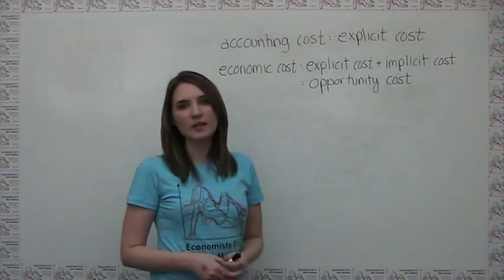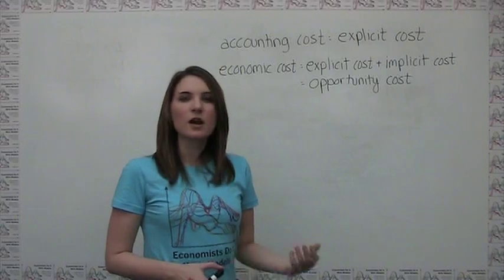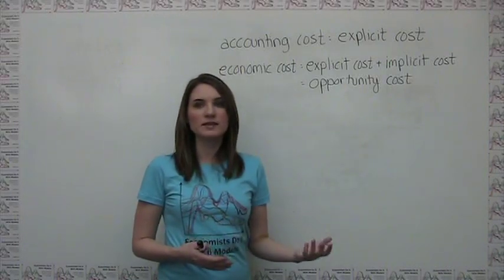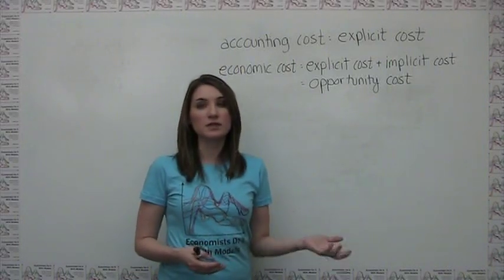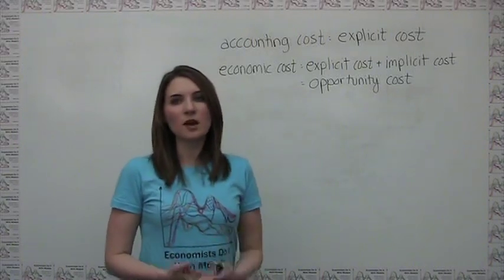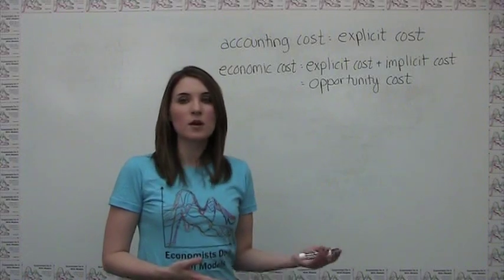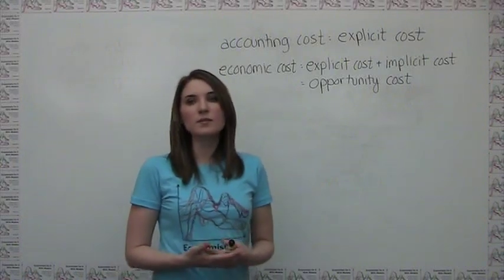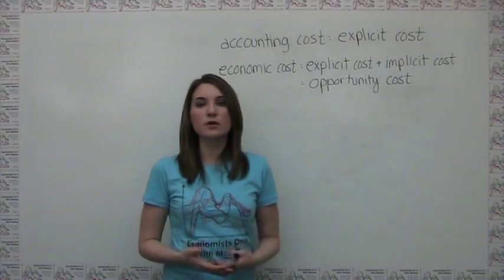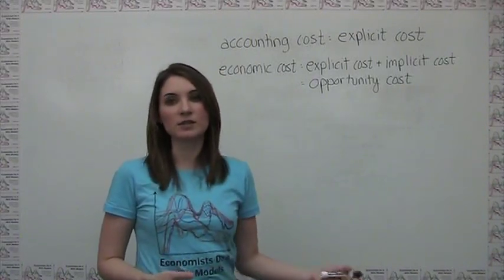Now we're ready to turn to the other side and think about a firm's costs. Economists define the cost of something as what one has to give up in order to get that thing. This definition of cost therefore includes not only explicit monetary costs, but other implicit costs, which are the value of the foregone alternatives that you sacrificed in order to make a particular choice.